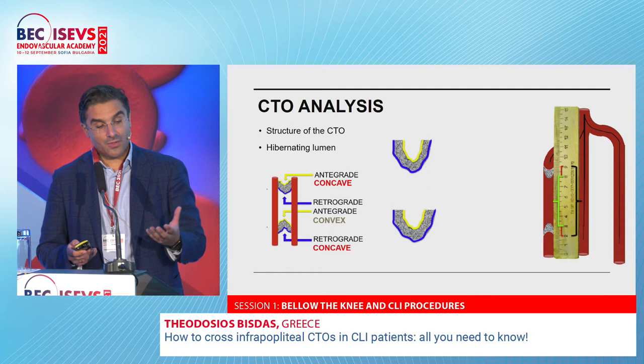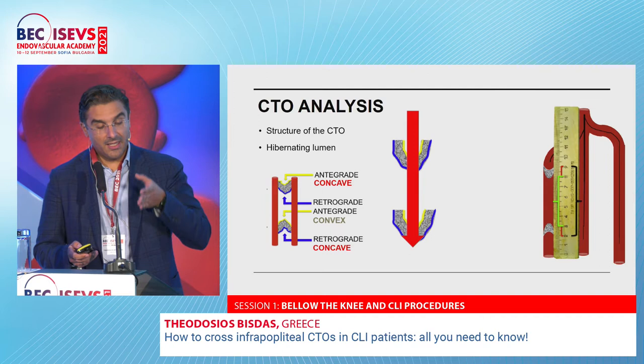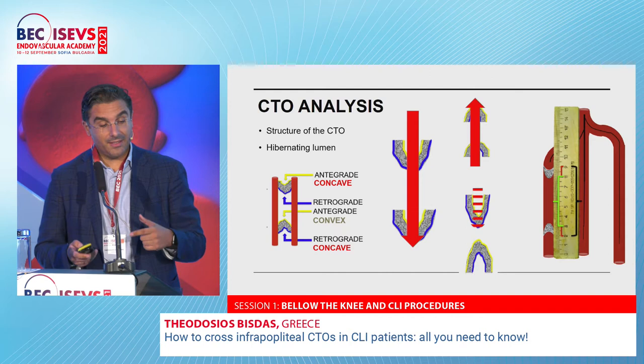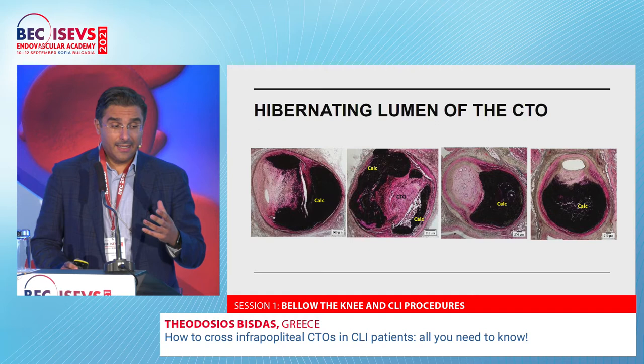Based on cap morphology, we can decide the approach: if we have a concave proximal cap we can go directly through a transfemoral approach to stay intraluminal; if we have a convex cap, we may need to go from a transpedal approach; and if we have a mixed configuration, we may need a rendezvous technique from above and below.